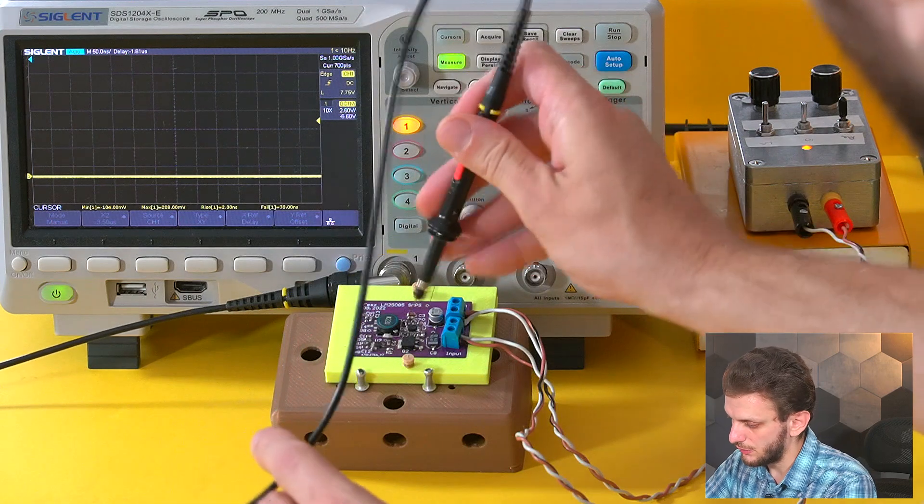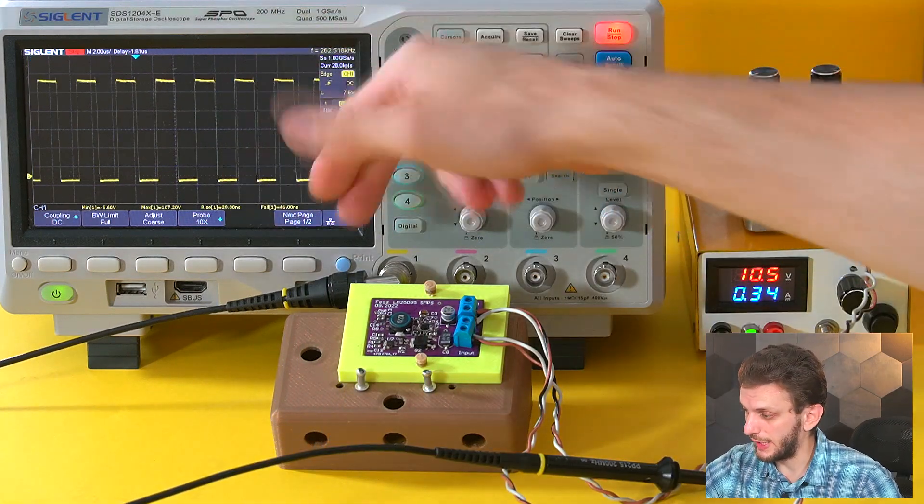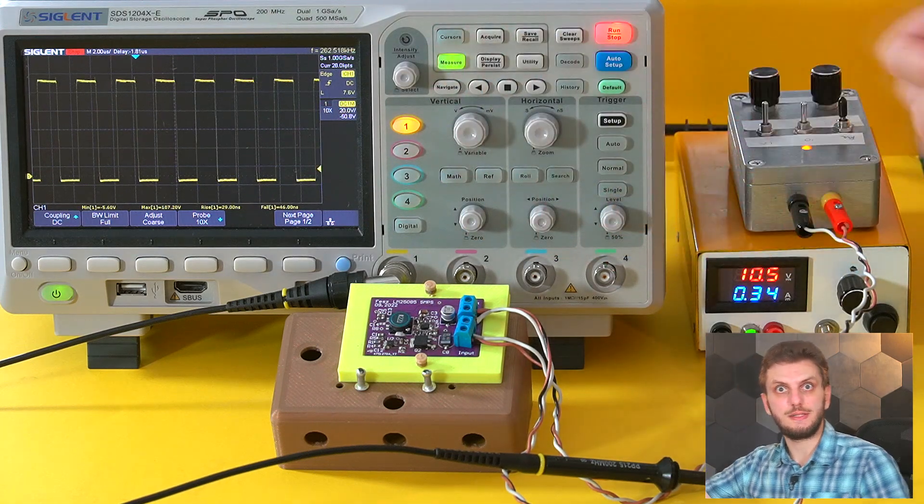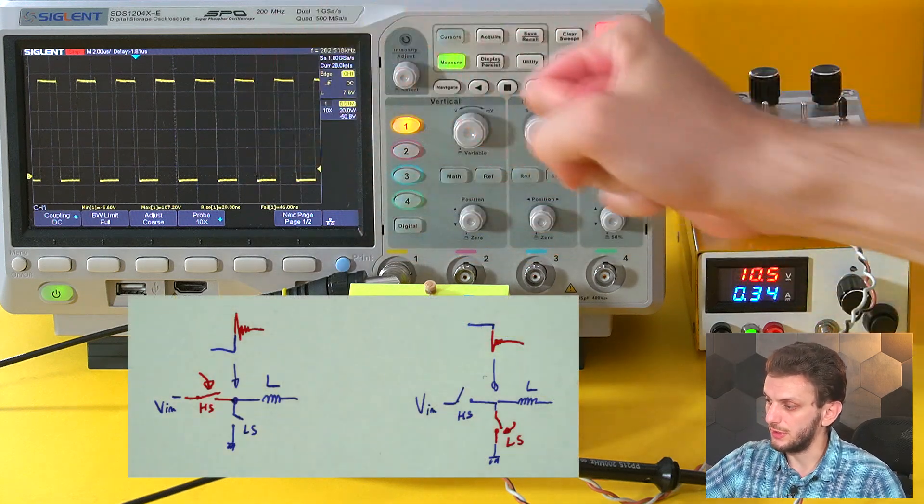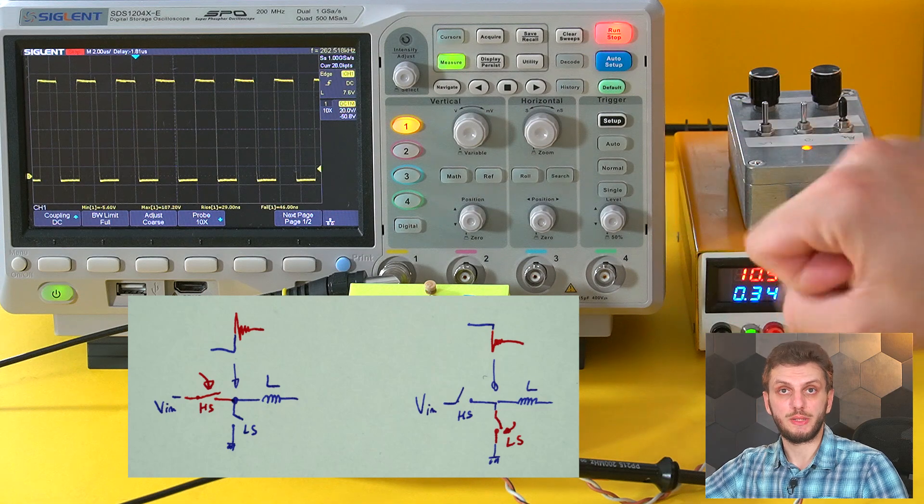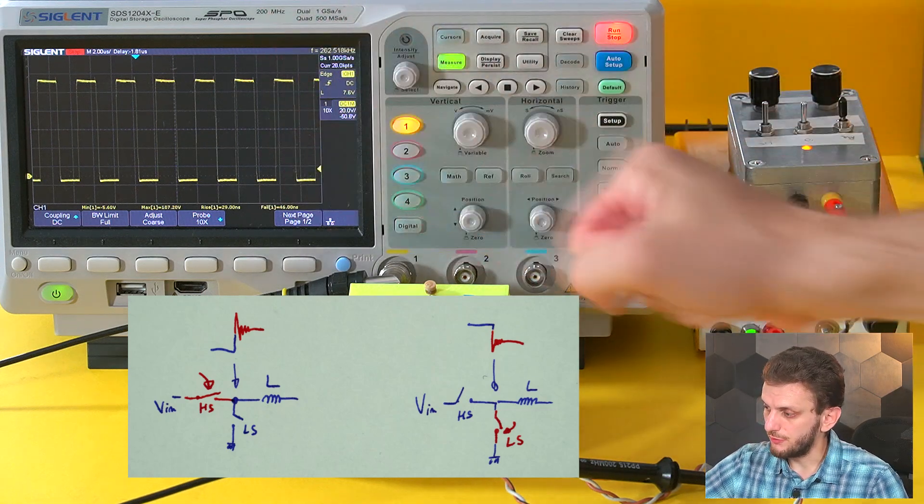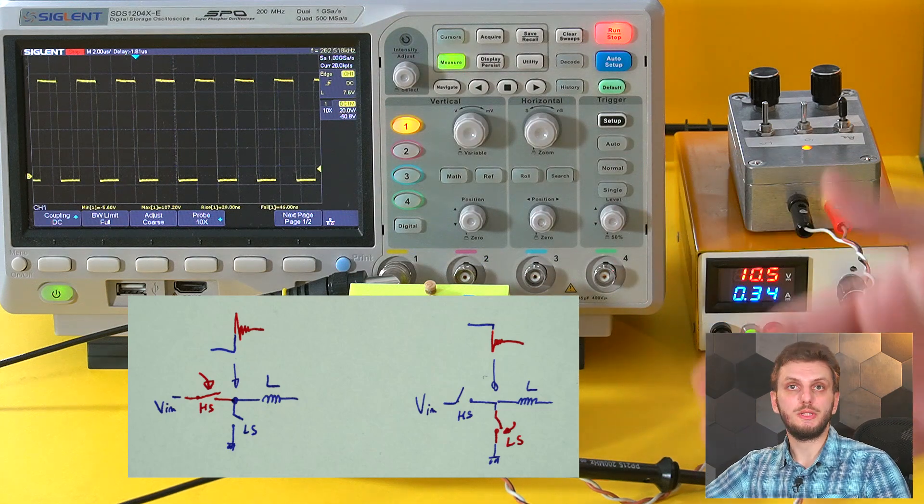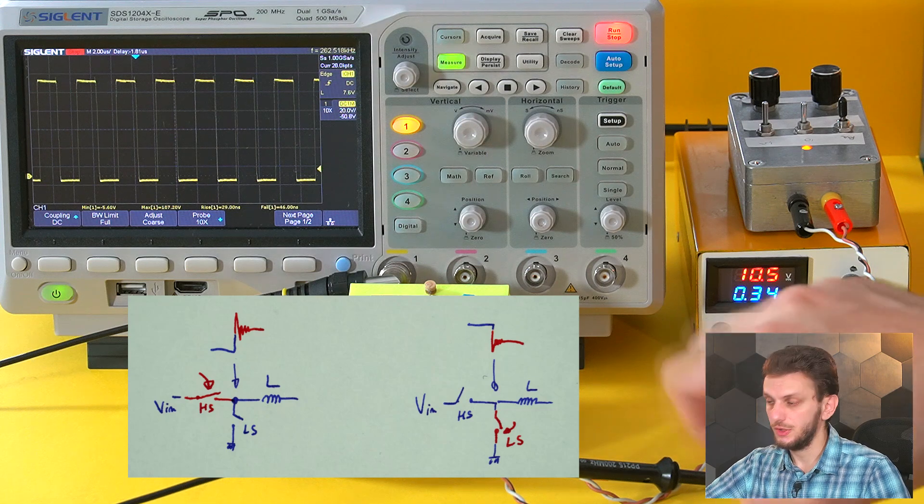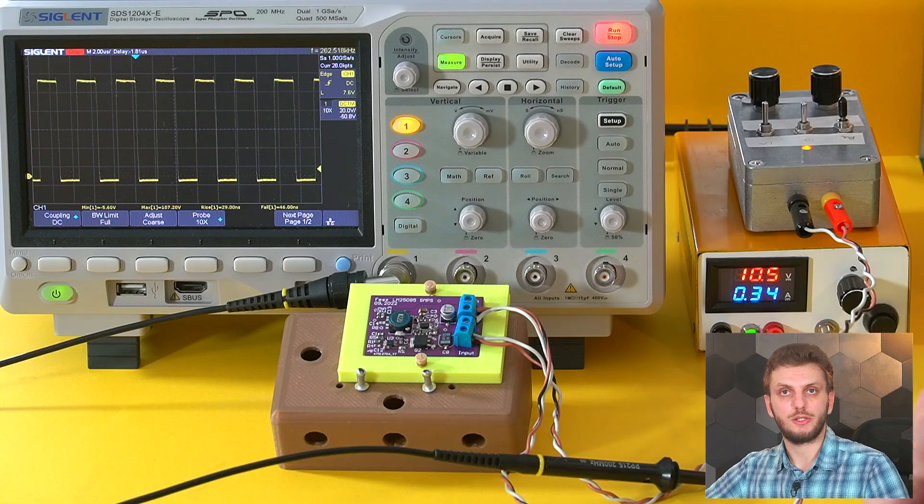Ideally, you want measurement equipment that has a higher bandwidth than the signals that you are measuring. But that gets really expensive really fast. Anyway, with this direct probing measurement, we'll first of all tell us the peak high and low values, and secondly, which of the switches actually needs our attention.